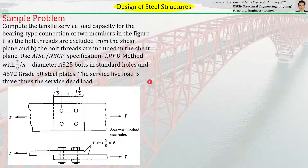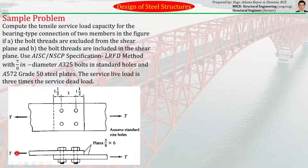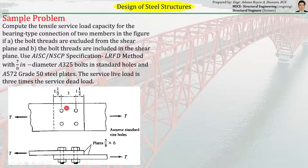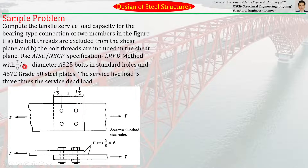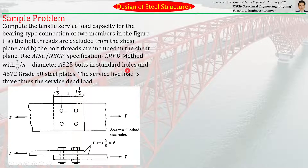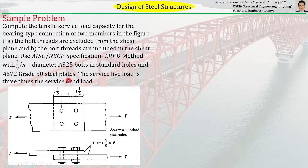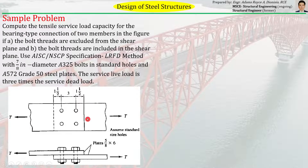We are given a lap joint — two plates, the upper plate and the lower plate, being subjected to a tensile force T. They are connected by four bolts (1, 2, 3, 4) with dimensions and geometry as shown in the figure. The bolt diameter is 7/8 inches and they are A325 bolts in standard holes. The plates are A572 Grade 50 steel plates.